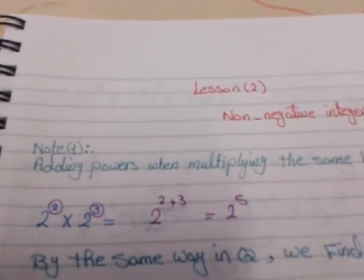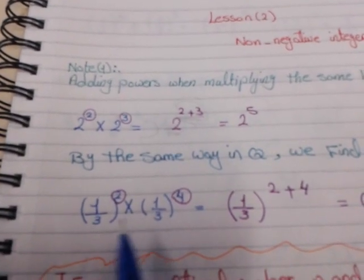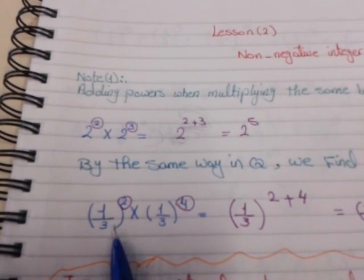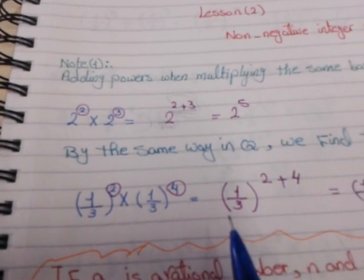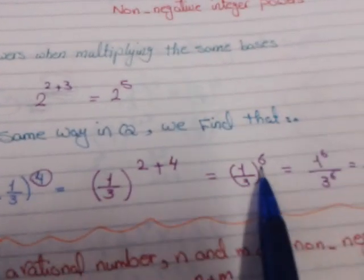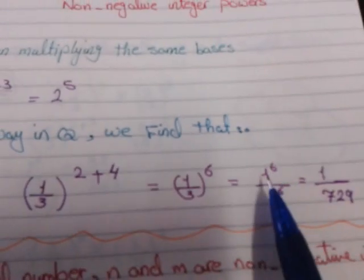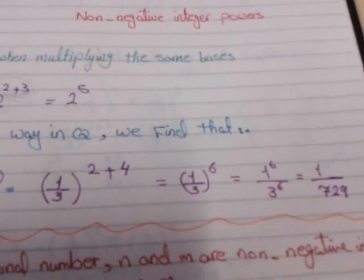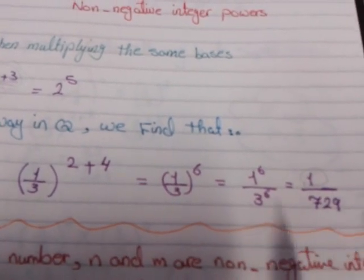We apply this rule to rational numbers. For example, multiplying the same fraction: (1/3)² times (1/3)⁴. We take 1 over 3 and add the powers: 2 plus 4 equals 6, giving (1/3)⁶. Then distribute the power 6: 1⁶ over 3⁶. Since 1 to any power equals 1, and 3⁶ equals 729, the result is 1 over 729.